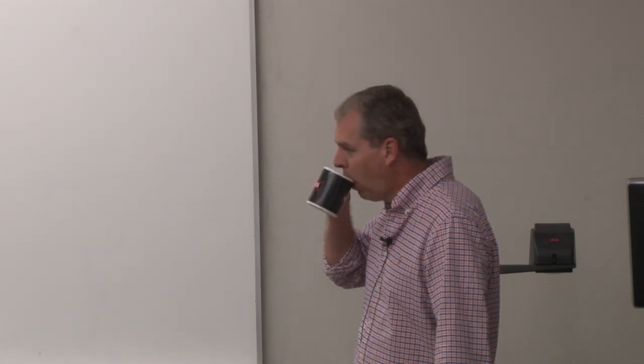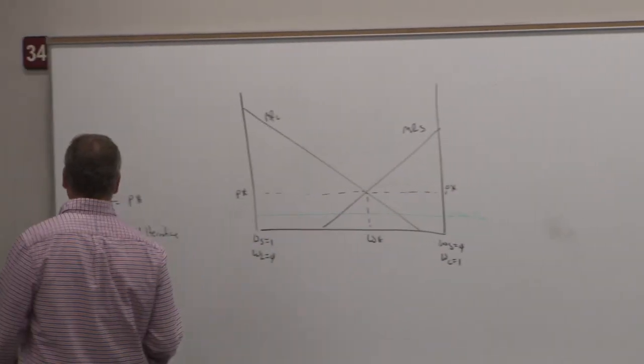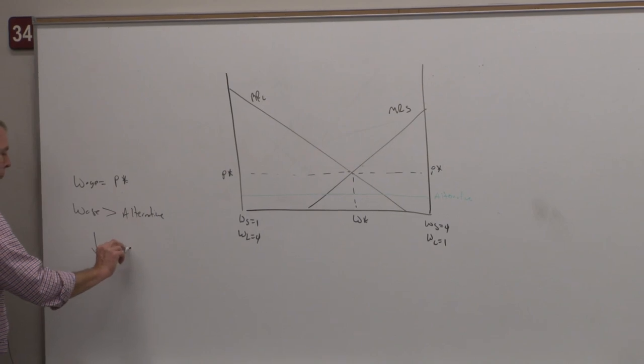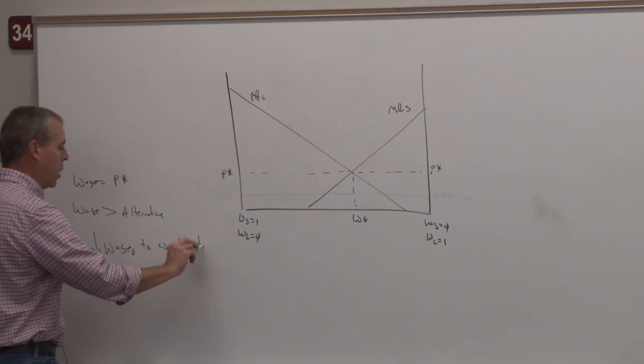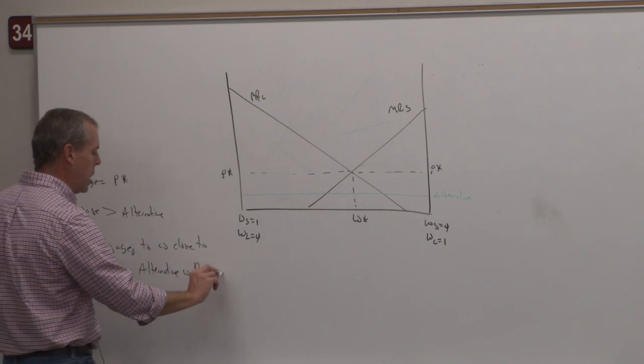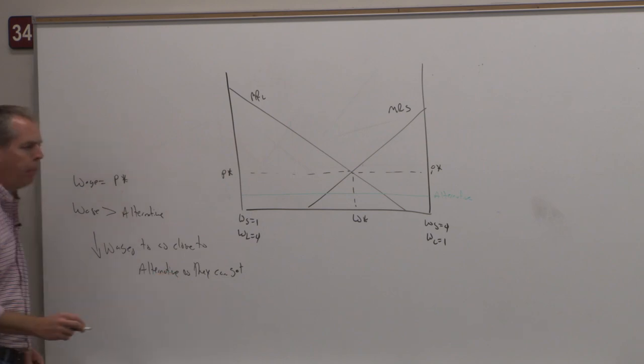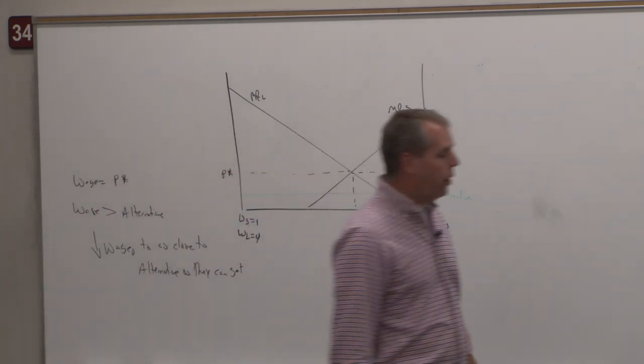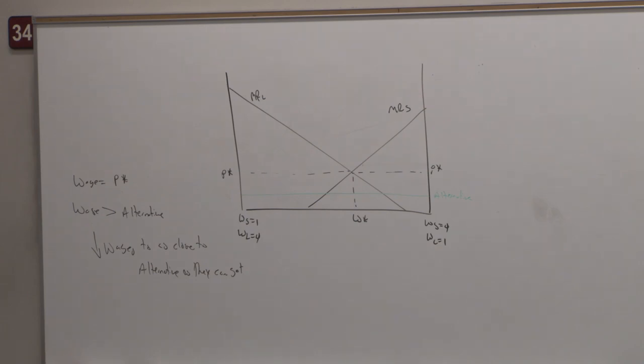P star might be $2 million, but if I'm getting paid $500,000, my alternative is $200,000 as an accountant, I'm going to take the $500,000. So the team owners have an incentive, for obvious reasons, to try to depress wages to as close to alternative as they can get. Why pay P star when you can pay some amount less than P star but that's greater than the alternative? And of course, they'd pay even less than that if they could. So the question is, what are the things that they've done to help reduce wages? And we're going to look at two of them today. First one's the draft.